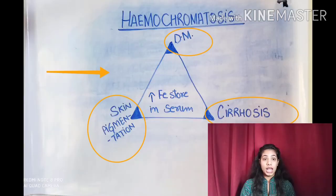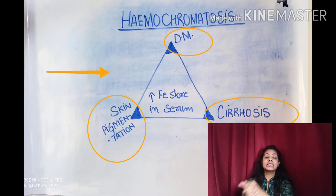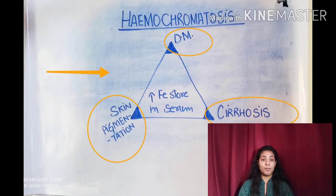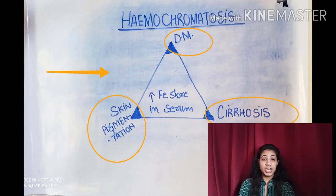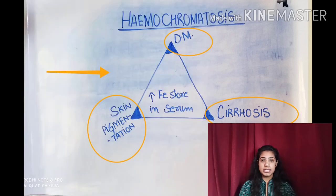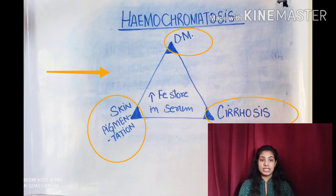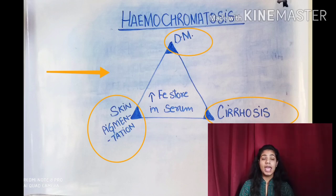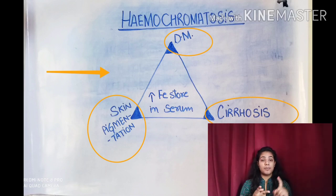Now, hemochromatosis — how do we differentiate it from hepatomegaly? We have to remember a triad consisting of three things: first, the patient will have pigmentation on the skin, as shown in the diagram; second, the patient will be suffering from diabetes mellitus — we can check the HbA1c level or blood glucose level; and third, the patient will have liver cirrhosis.